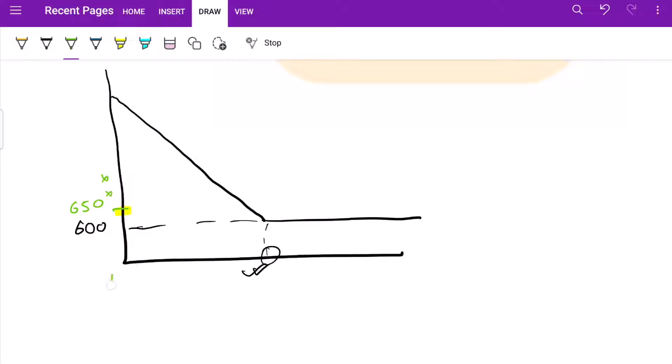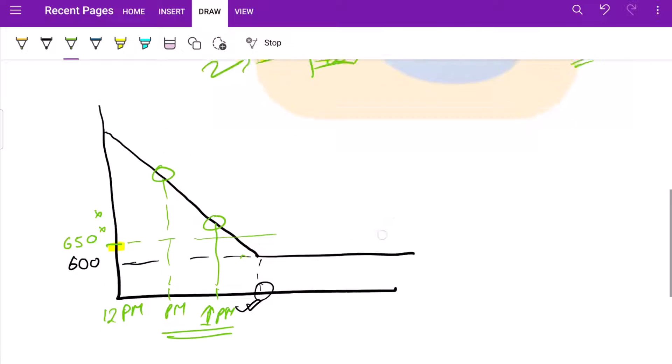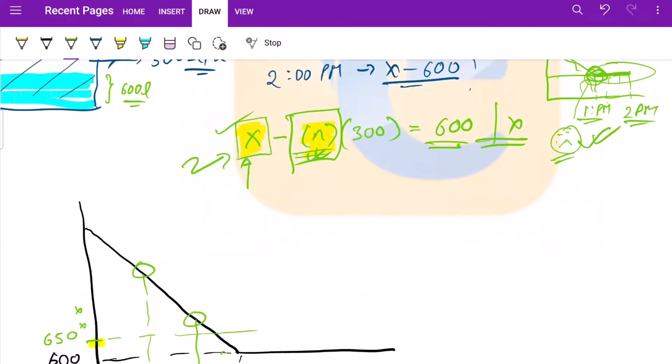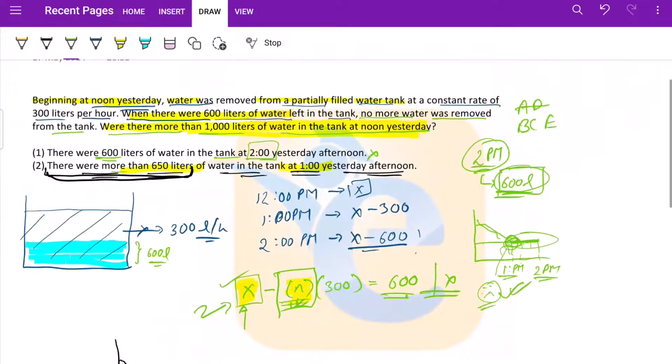Say for example, if this is our 650 mark, at 1 PM this was greater than 650. So basically if this is 12 PM, we can put 1 PM anywhere. 1 PM can be here, it's more than 650, or it can be here as well. At 1 PM it is again more than 650. So we do not know again exactly at what point was the level at 600.